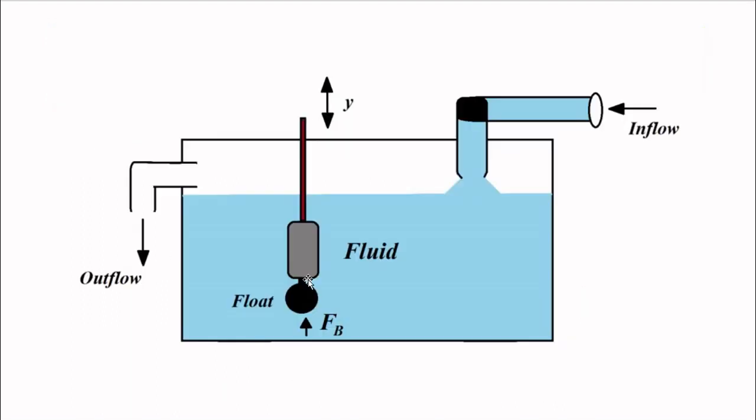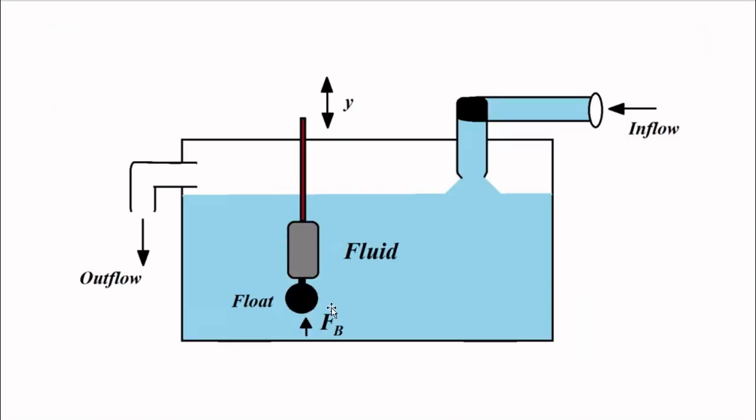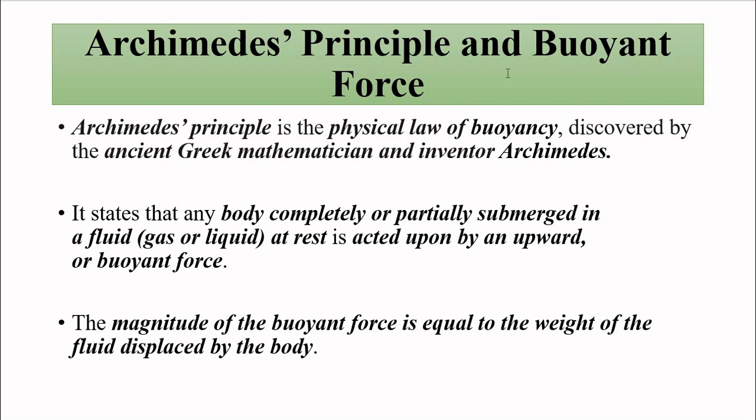This causes linear displacement of the stem attached to the float that can be connected to either secondary transducer, capacitive, inductive, LVDT, potentiometer, resistive, whatever. Or it can be connected to a simple pointer scale arrangement and can be calibrated to get a direct readout in terms of density. Because buoyant force is in direct relationship with density of the fluid. V_f and g are fixed. This is the basic operating principle of the hydrometer system for the measurement of density which employs float stem arrangement. It operates on the principle of buoyant force and Archimedes principle.